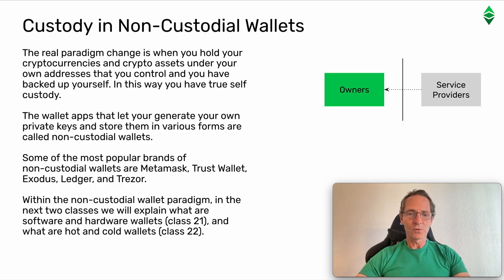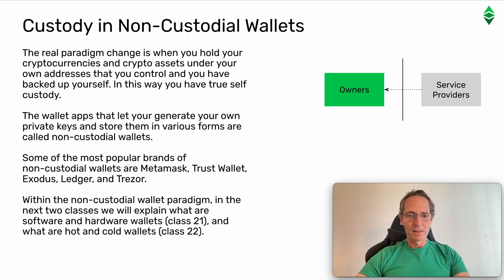Custody in non-custodial wallets. The real paradigm change is when you hold your cryptocurrencies and cryptoassets under your own addresses that you control and you have backed up yourself. In this way, you have true self-custody. The wallet apps that let you generate your own private keys and store them in various forms are called non-custodial wallets. Some of the most popular brands of non-custodial wallets are Metamask, Trust Wallet, Exodus, Ledger, and Trezor.